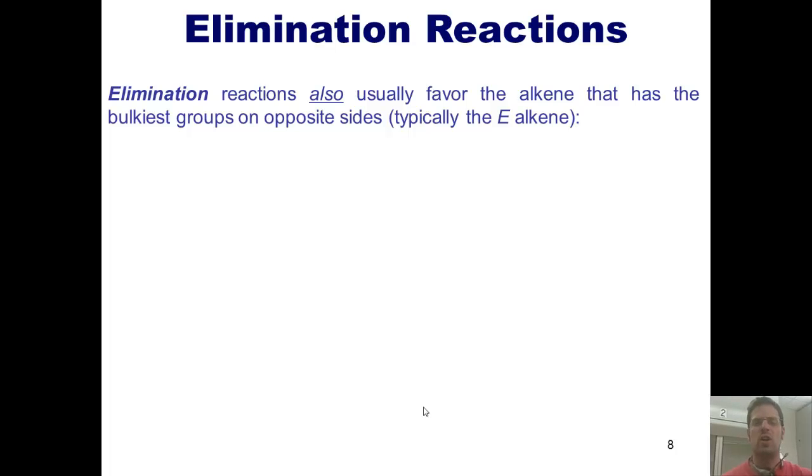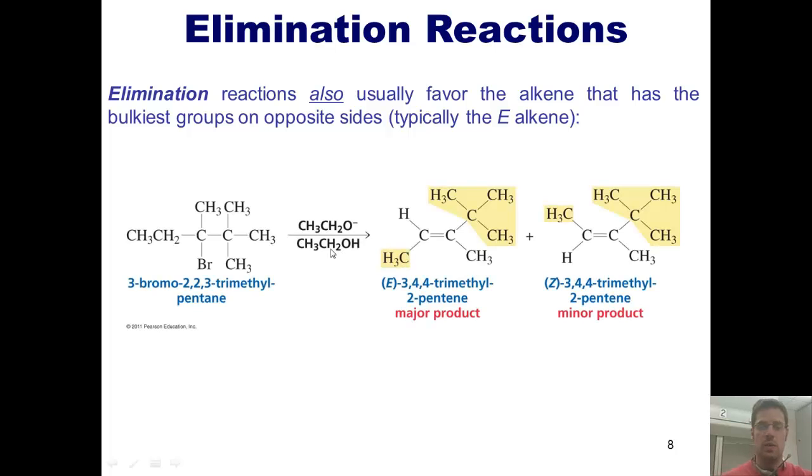Elimination reactions also usually favor the alkene that has the bulkiest groups on opposite sides, as I mentioned earlier, typically the E-alkene. So here's an example where my base only has one proton that it can possibly eliminate, the one located on the carbon to the left of the bromine. As this base comes and strips that proton, thrusts the electrons down to form a carbon-carbon double bond at this position, kicks off the bromide, there are two different potential isomers that I could form.